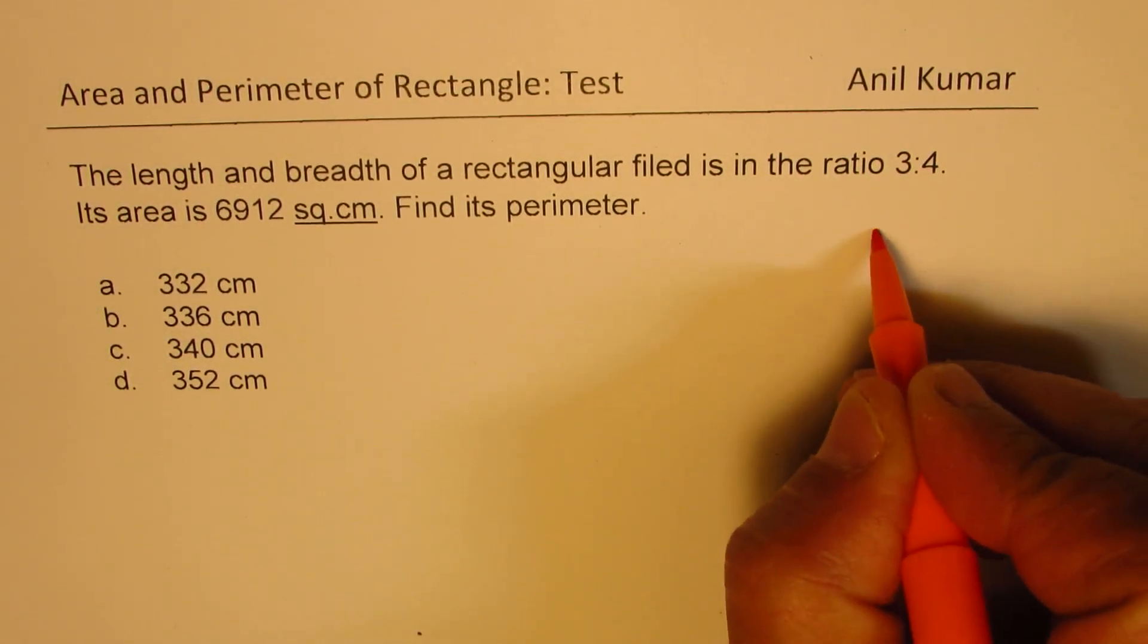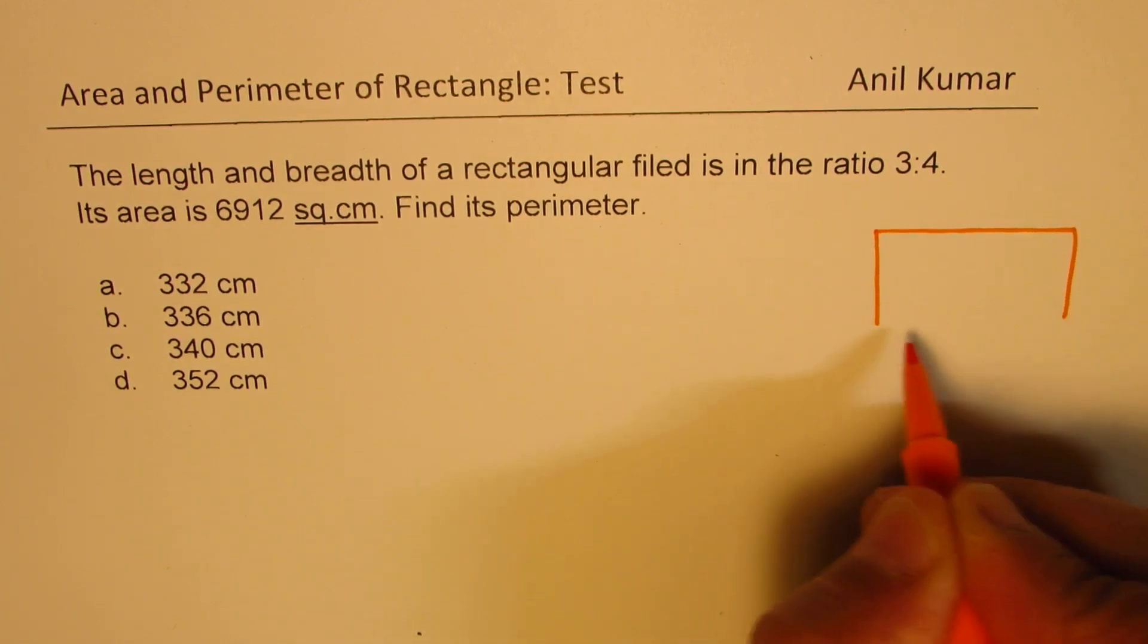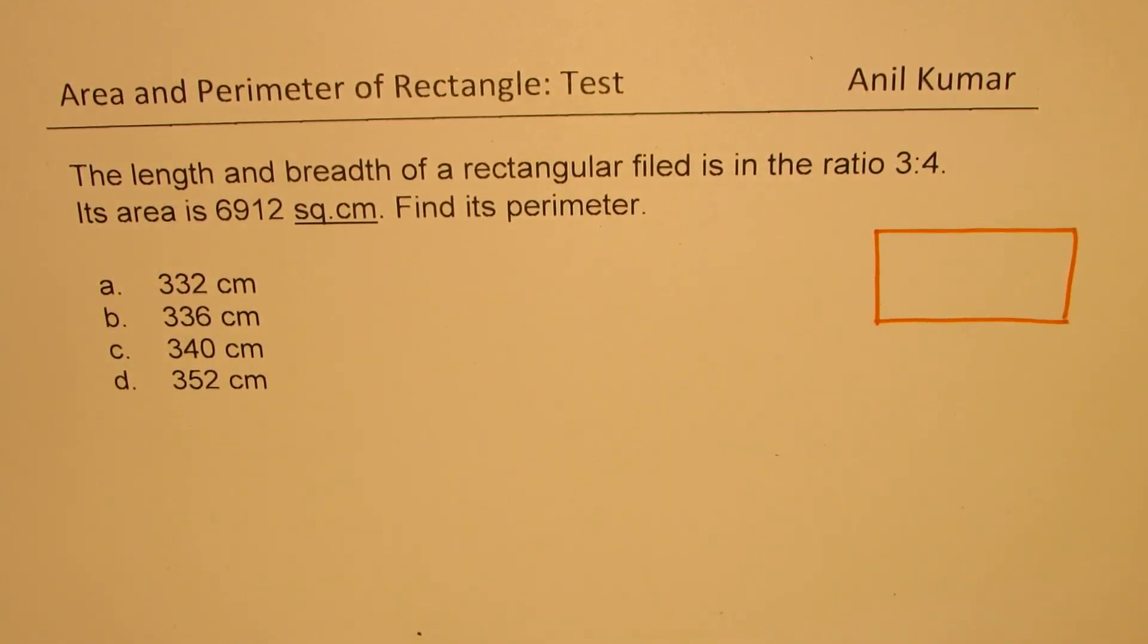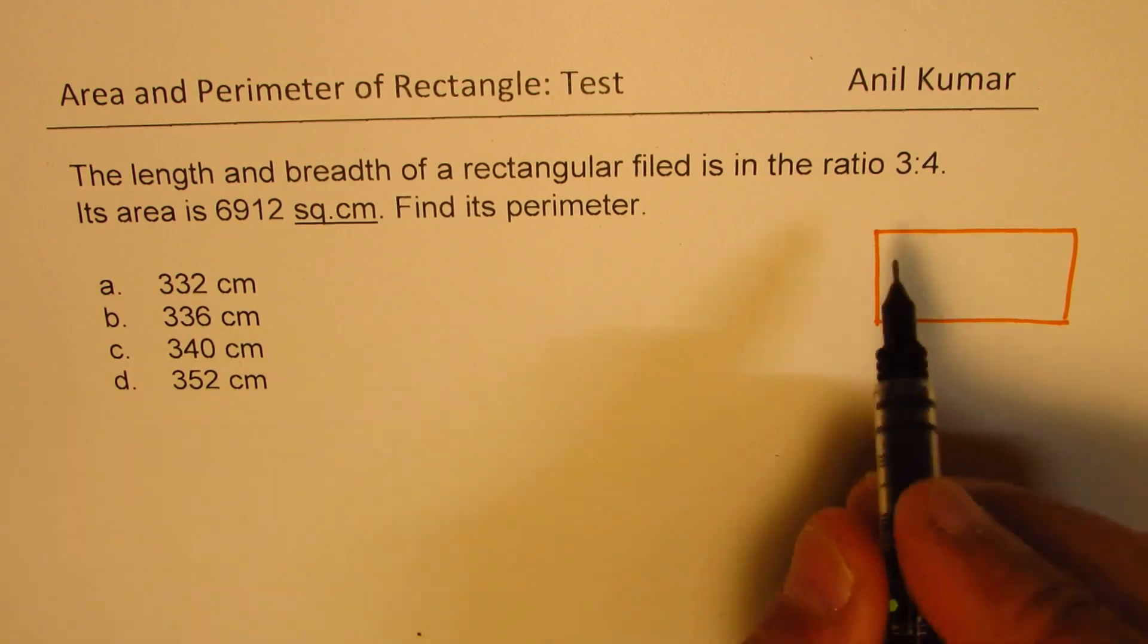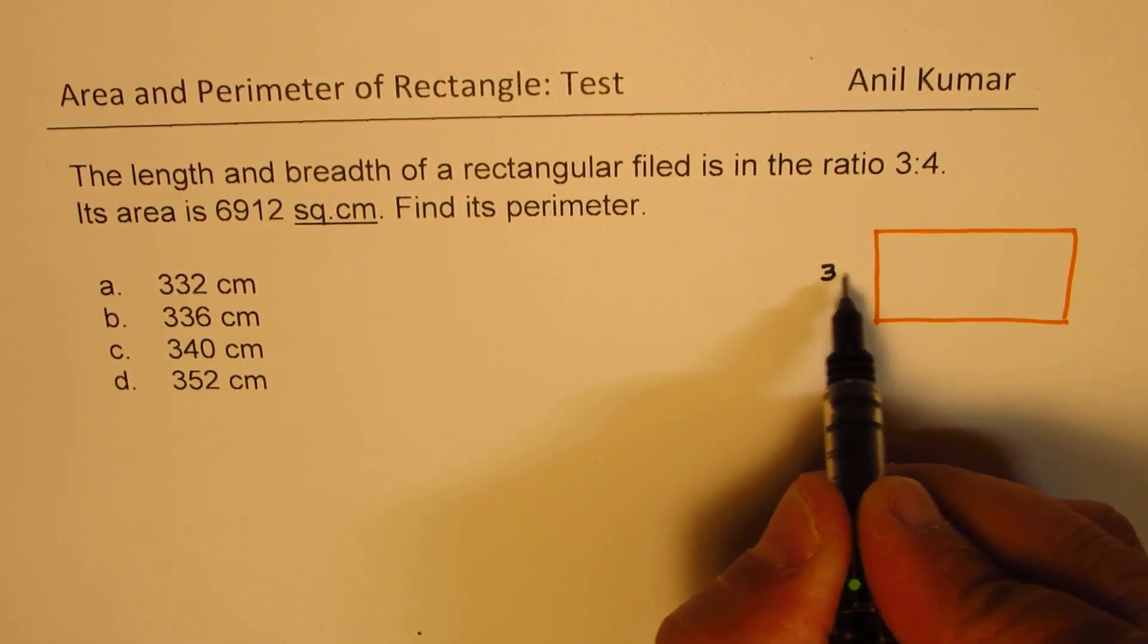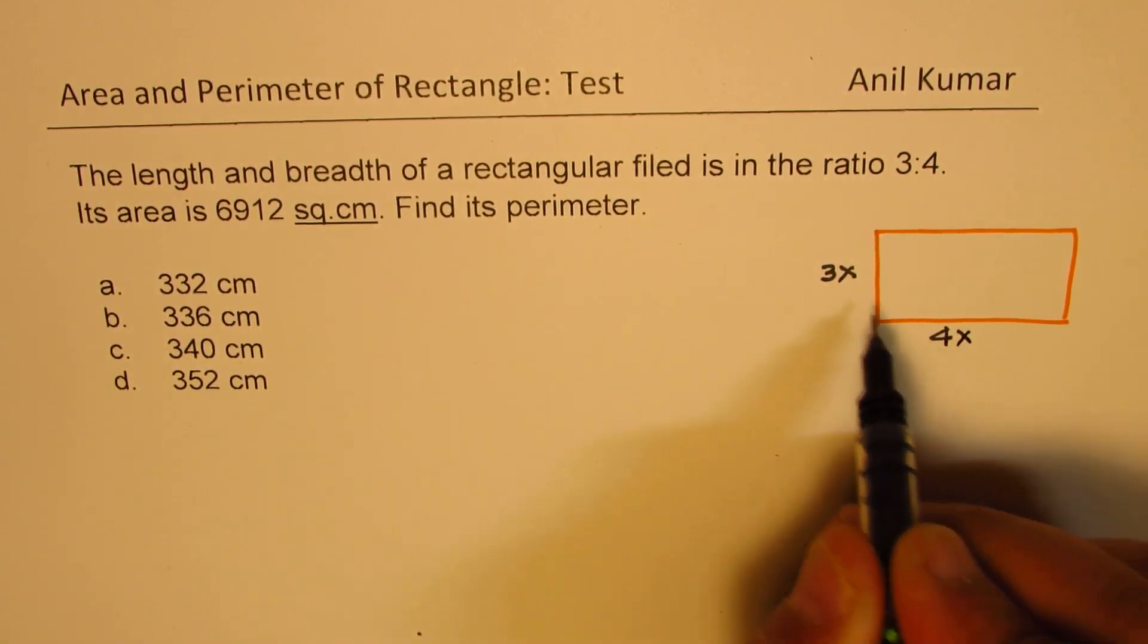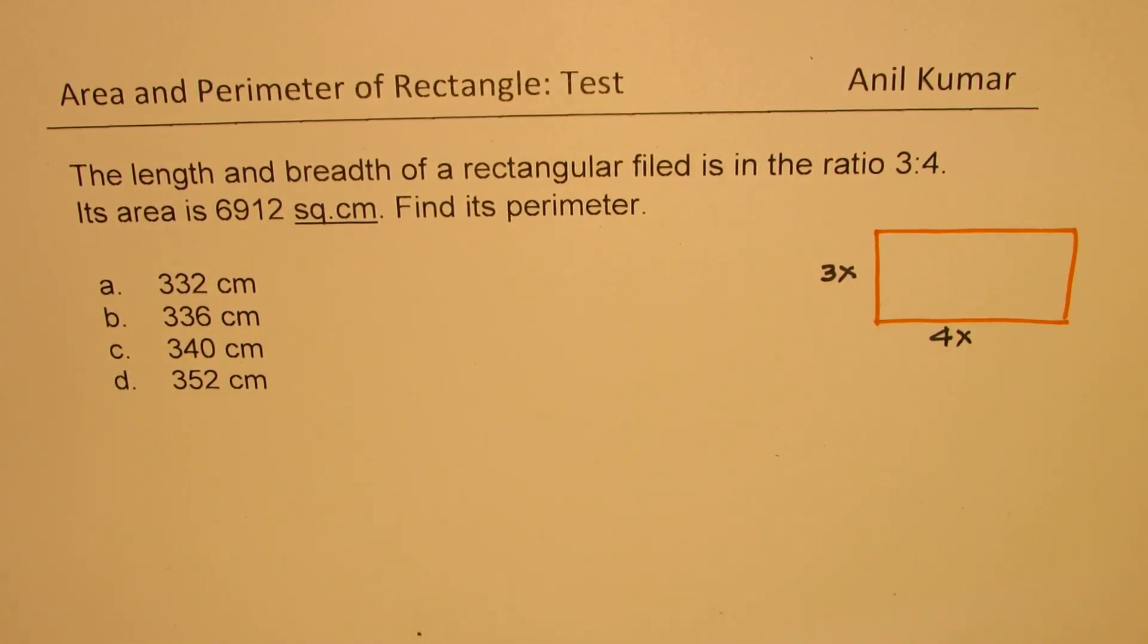Now, when you say that, it means what? Let's say that's a rectangular field. Basically, the ratio of 3 to 4 means it could be 3x and 4x. So that becomes the ratio of 3 to 4.